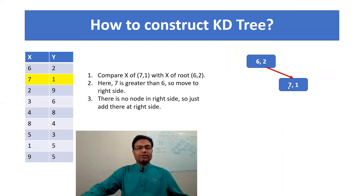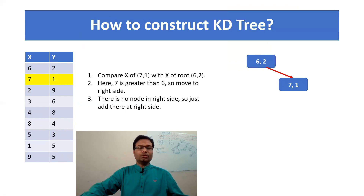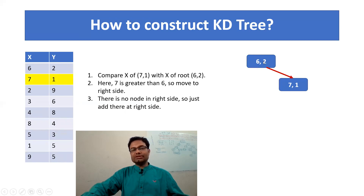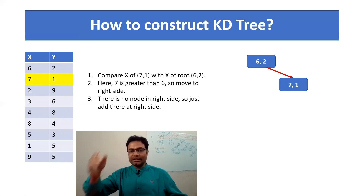Next, what you have to do — very interesting — the second data is (7, 1). First you compare any new node with the root. First you compare the x, then y, then x, then y. So x of (7, 1) is 7, and the x of the root node is 6. So we compare 7 and 6: 7 is greater than 6, so (7, 1) should go to the right side. Right side has no element, so no need to compare y — just attach (7, 1) to the right side of (6, 2).